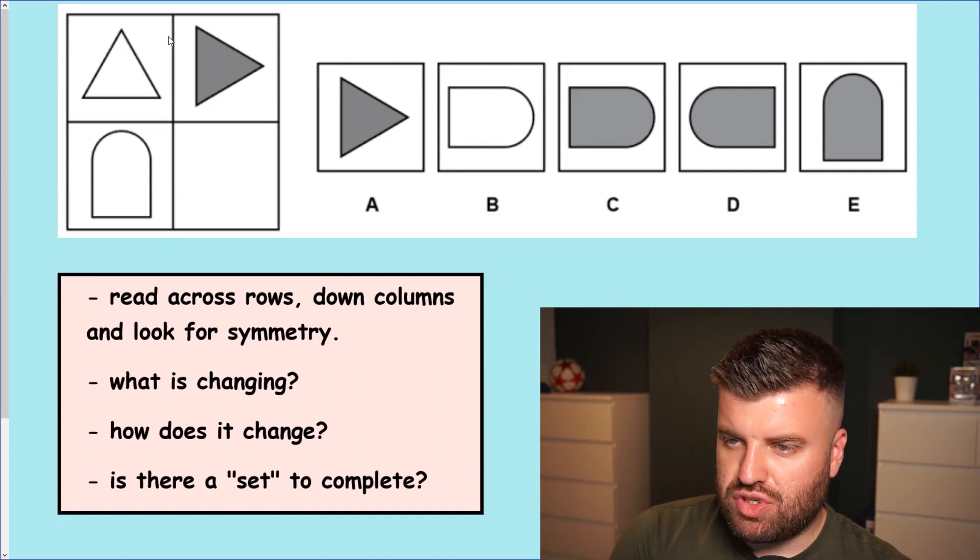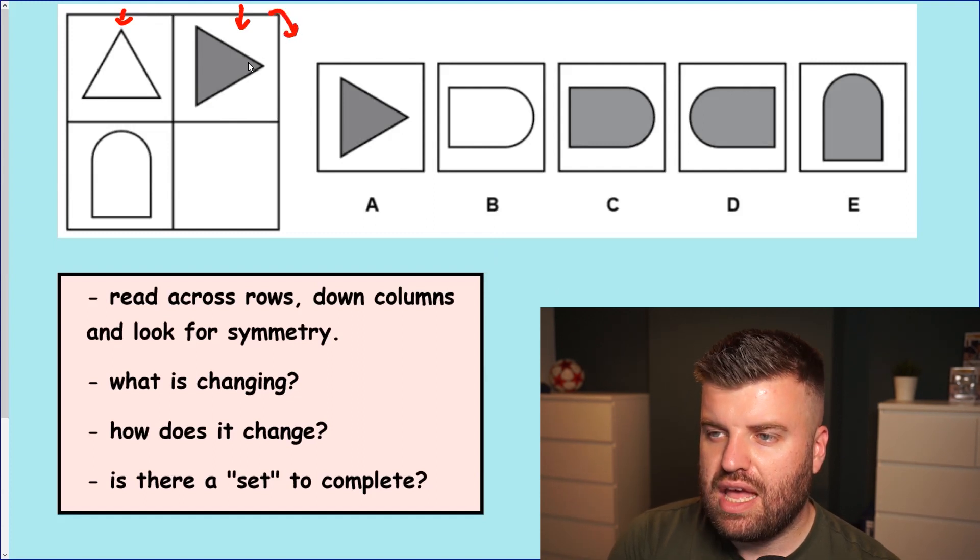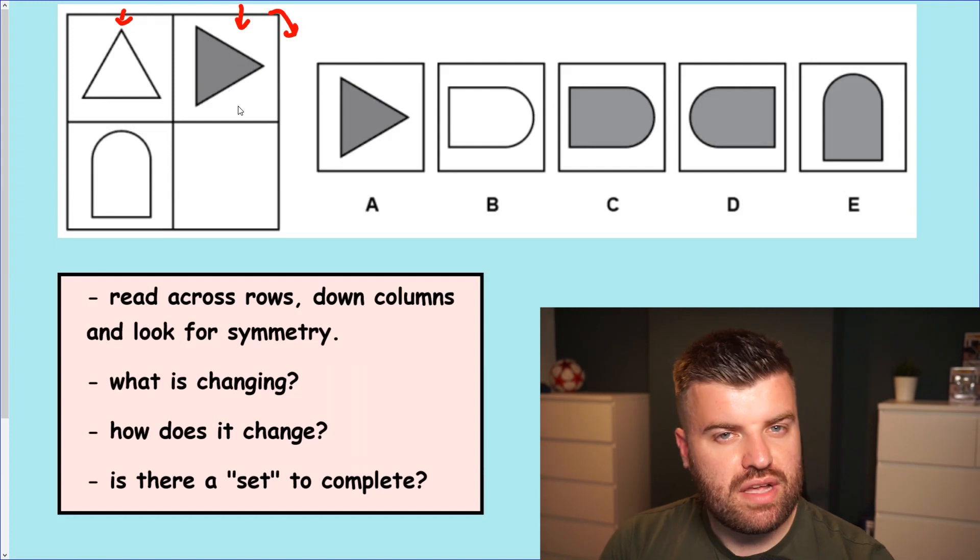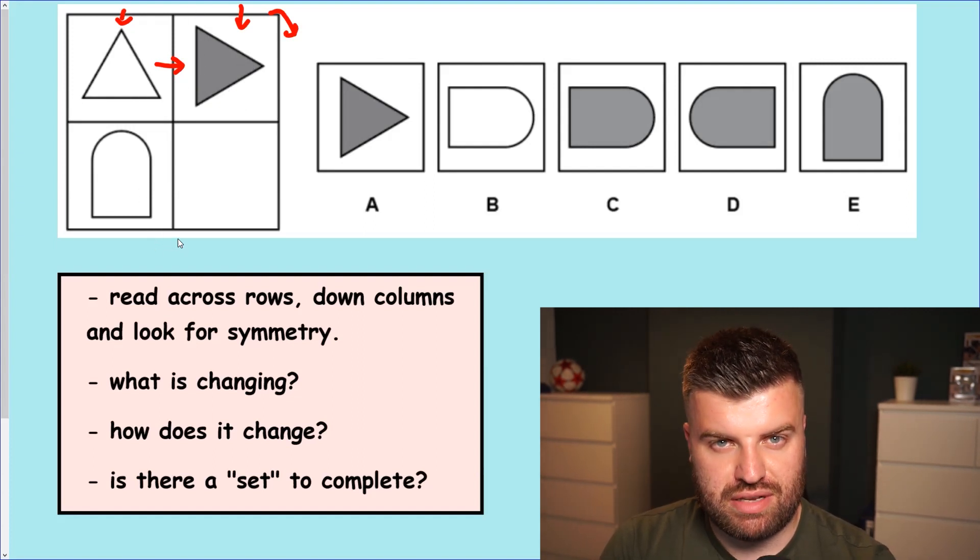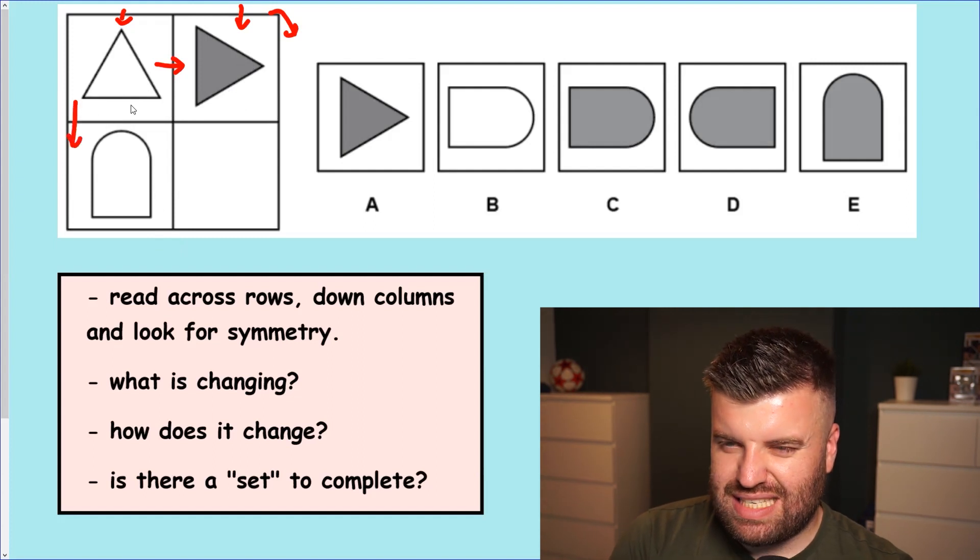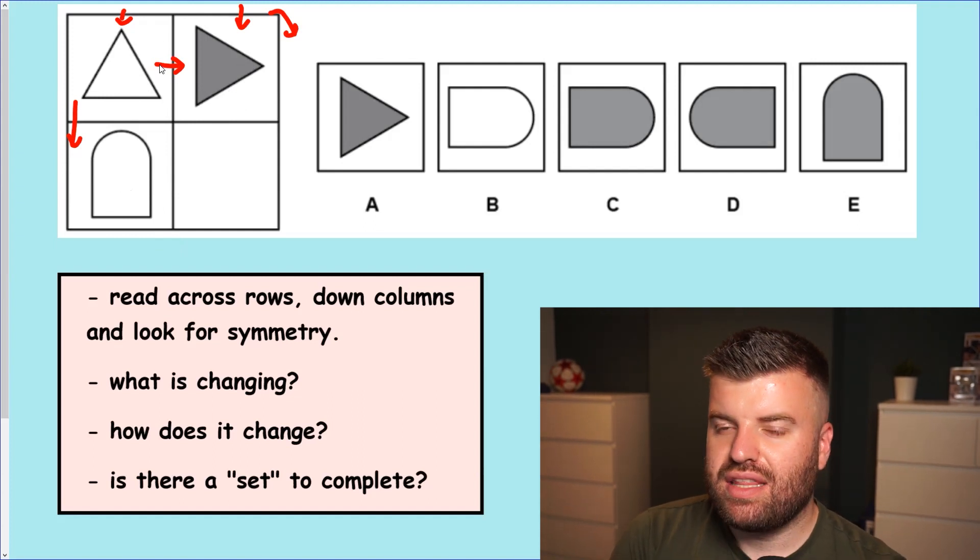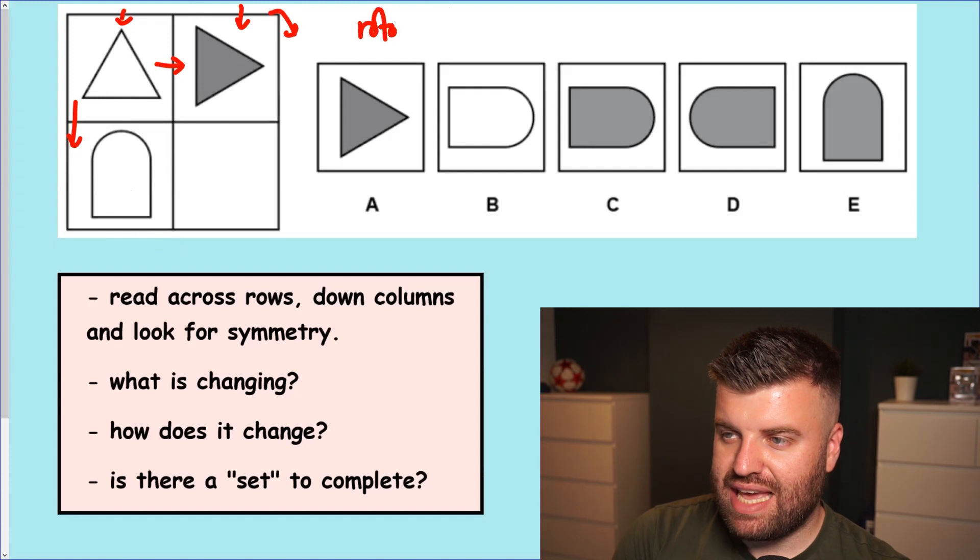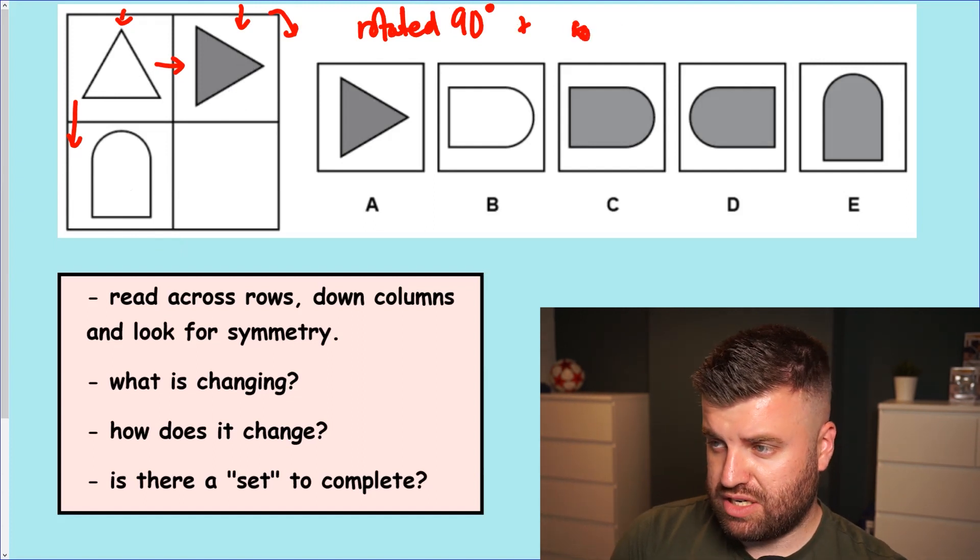So we're given a two by two grid and we are given a triangle here and another triangle which you're probably straight away thinking rotation. You'd be right. It's been rotated 90 degrees clockwise and it's also now shaded grey. So the first type of grid question is looking across rows or down columns for anything that's changing, some kind of transformation.